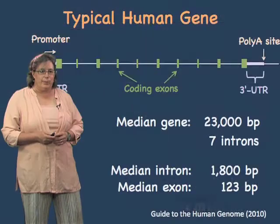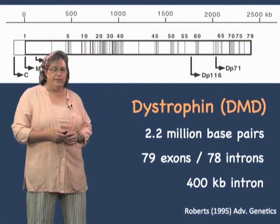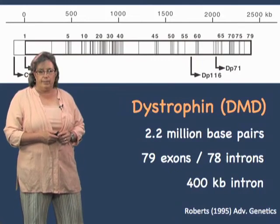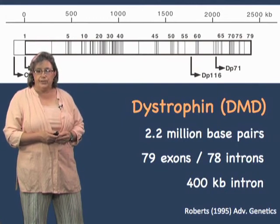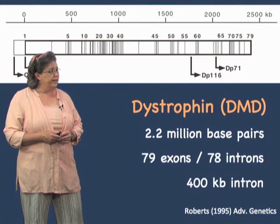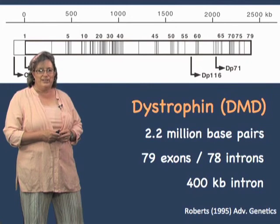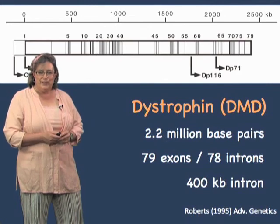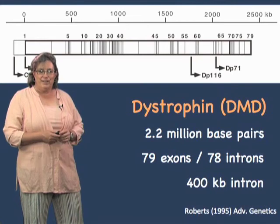I want to tell you about a particularly gargantuan gene: the dystrophin gene. Dystrophin encodes a protein necessary for your muscles, and mutations in this gene are one of the causes of muscular dystrophy. The DMD gene is the second largest gene in the human genome — it is 2.2 million base pairs long, has 79 exons and 78 introns, and one of those introns is 400,000 nucleotides long. To really get a sense of the scale, I'm going to show you a movie.